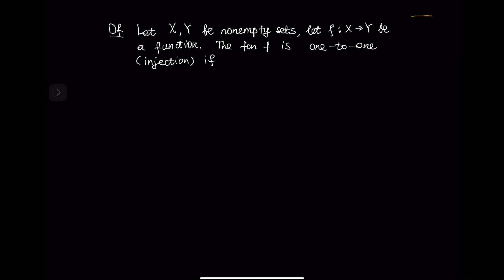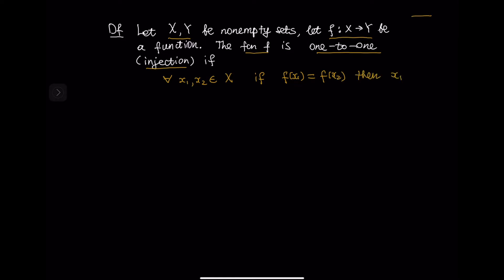Let us begin with the definition of a one-to-one function. If you want to review the definition of a function, you can watch the previous lecture, lecture 8, linked in the description. So let X and Y be non-empty sets and let f from X to Y be a function. This function f is one-to-one, or an injection, if for every x1 and x2 in the set X, if f(x1) equals f(x2), then x1 equals x2.